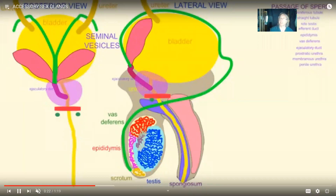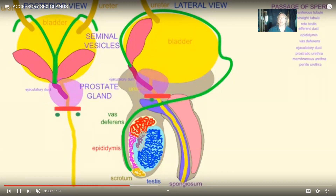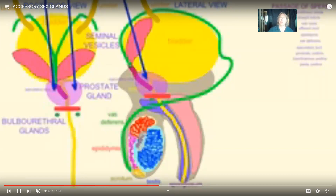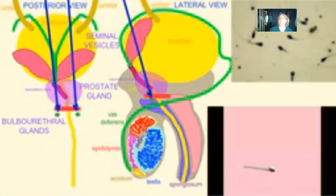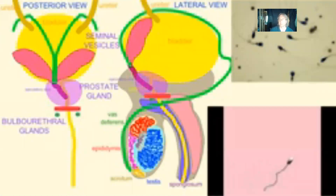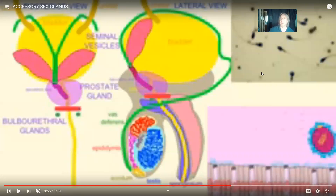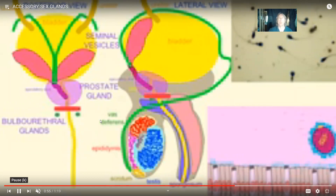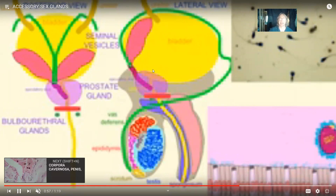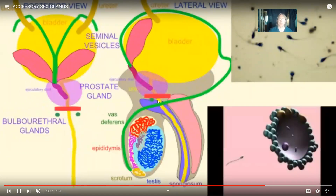There's more to semen than just sperm. There are a number of secretions, which is why there are other glands: the seminal vesicles behind the bladder, the prostate gland under the bladder, and the bulbourethral glands between the bulb of the penis and the urethra. These secrete fructose sugar as a food source that the sperm use as an energy source while they swim. They secrete alkaline secretions which help neutralize the acid of the vagina, and other things such as androgen hormones which can cause uterine contractions in the woman to help move the sperm.